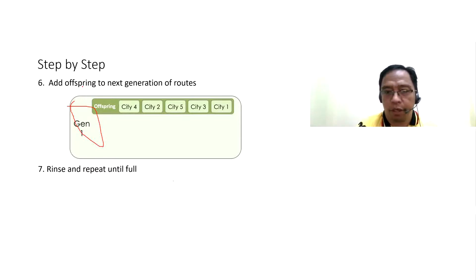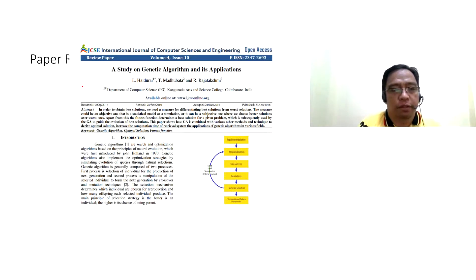That's it for my genetic algorithm topic. Let us now proceed to the paper review on genetic algorithm. The paper is entitled, A Study on Genetic Algorithm and Its Applications.